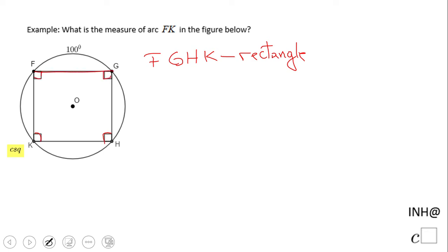These four right angles give us FG parallel to KH and FK parallel to GH, based on the converse of same side interior angles. And a parallelogram that has one right angle is a rectangle. So yeah, this is a rectangle, which means FG is congruent to KH and FK is congruent to GH.